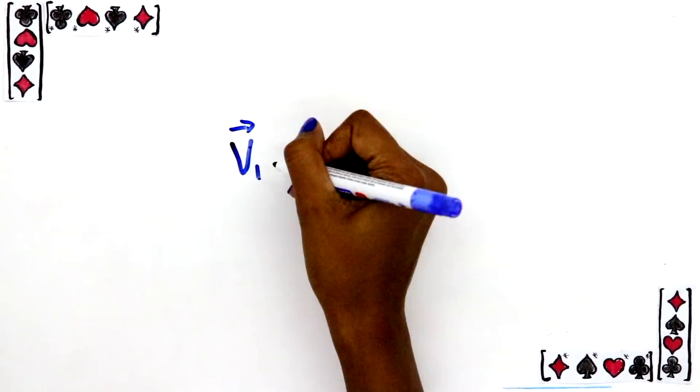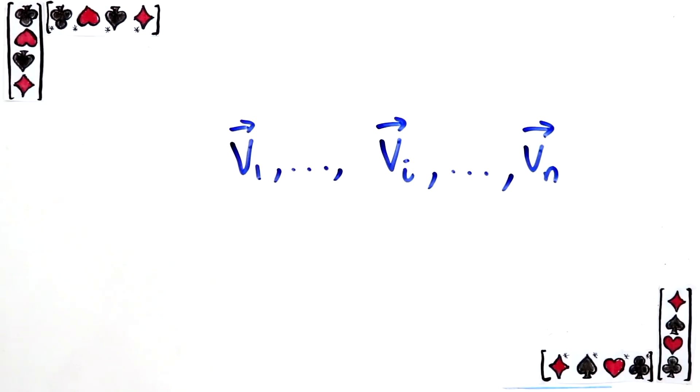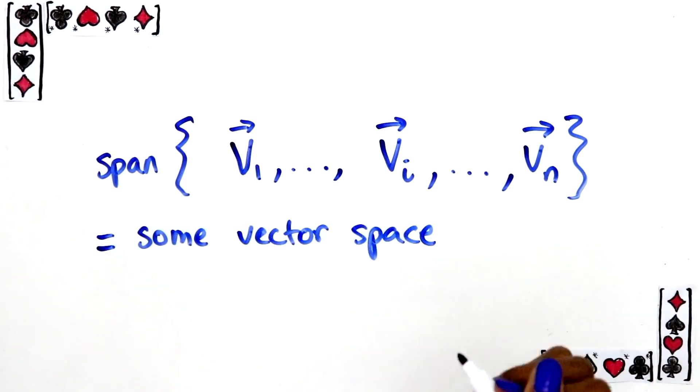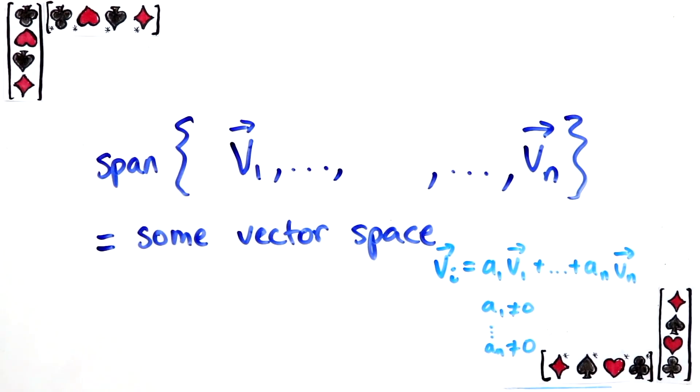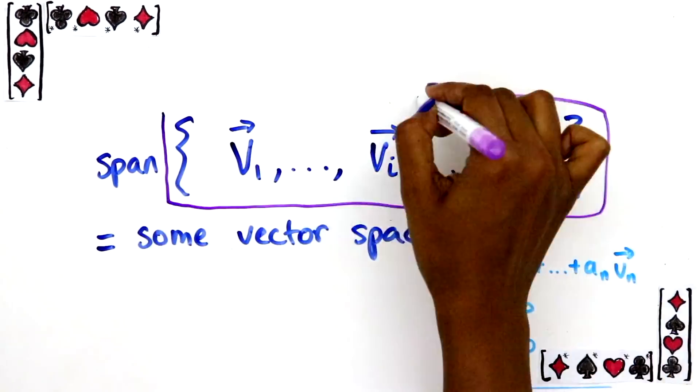Imagine that you have vectors v1 to vn spanning some space. A vector, say vi, is redundant if, when you take that vector out, you still get the same space. That happens when that vector can be written as a linear combination of the other vectors in the set. As long as none of the vectors are dependent on the other vectors like this, then we have the minimum number of vectors to span that space. If you deleted any, you'd get a smaller space. Then this set of vectors is called a basis for the space.